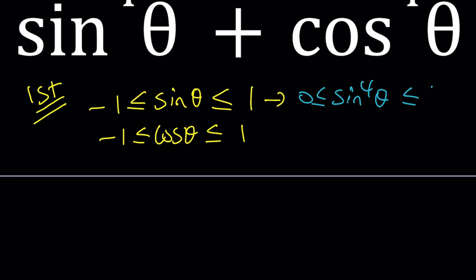And then same thing for cos⁴θ. As a quick shortcut, can we just add these two inequalities? I mean, you can add inequalities and then get sin⁴θ + cos⁴θ between 0 and 2. Yes and no.